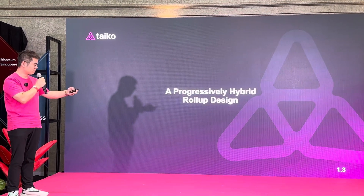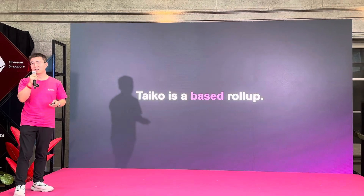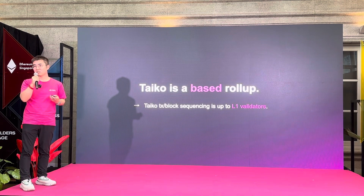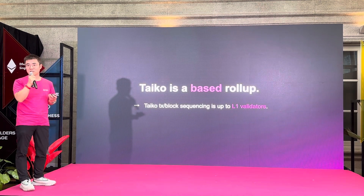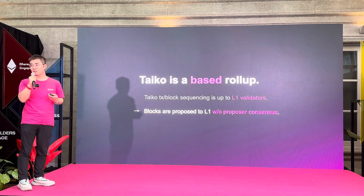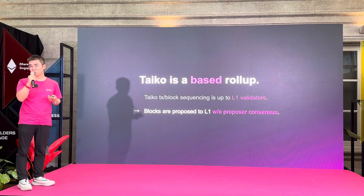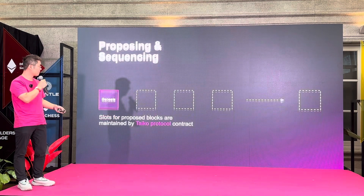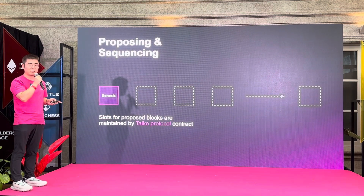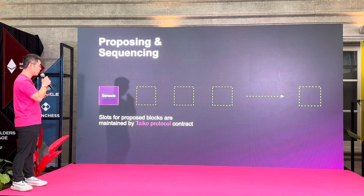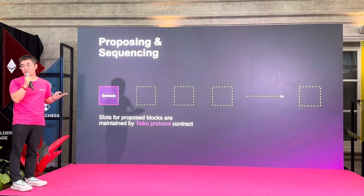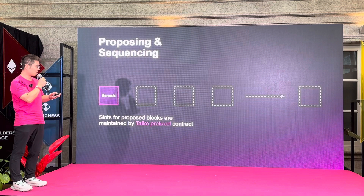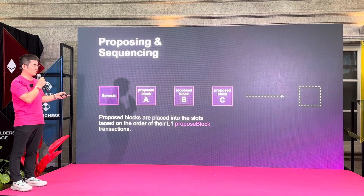So let's start with Taiko. Taiko is a based rollup. What it means is that it's really up to the L1 validators to determine the sequencing of transactions and blocks of the Taiko blockchain. So we don't have a consensus algorithm among special nodes. We don't have special nodes at all. No super nodes.